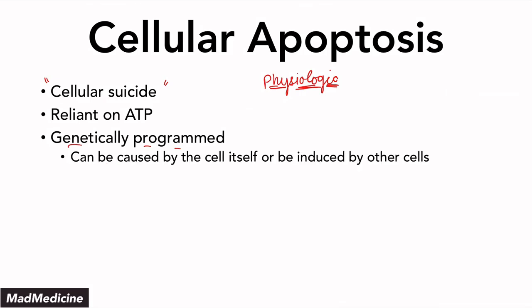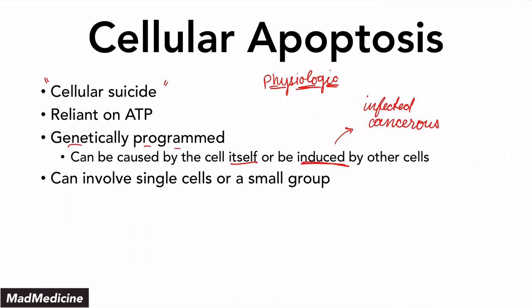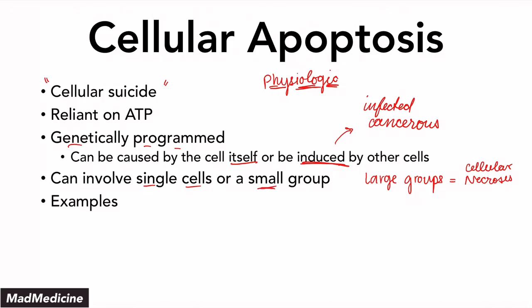Apoptosis can happen where the cell kills itself off, or another cell actually induces apoptosis. If the cell that's going to die is either infected, that can cause apoptosis. If a cell is a cancerous precursor or is precancerous, that is also an indication for a cell to kill off another cell. Apoptosis can involve single cells or a small group of cells, but it will never involve large groups of cells — large groups of cells dying off is known as cellular necrosis.